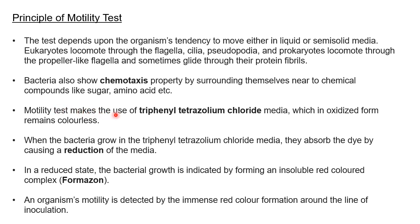The motility test makes use of TTC media — triphenyl tetrazolium chloride media — which in its oxidized form is colorless. When motile bacteria grow in this media, they absorb the dye, causing a reduction in the medium. In the reduced form, the dye gets reduced and the media color changes to red, indicating the bacteria is motile. The red colored complex is known as formazone.